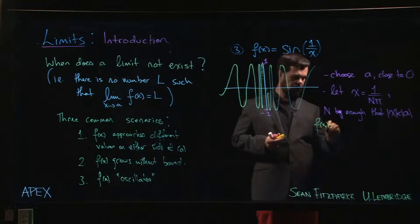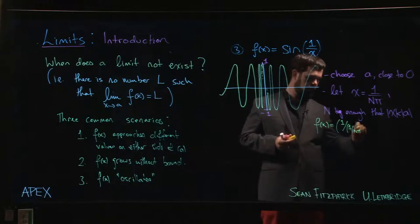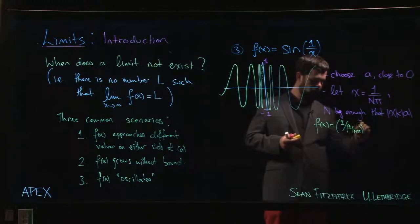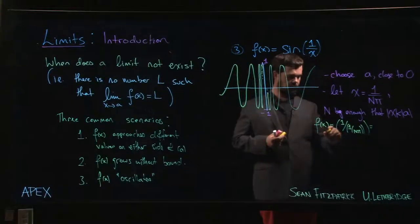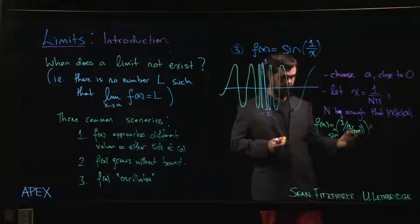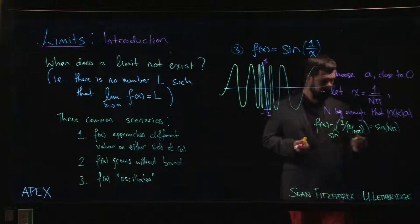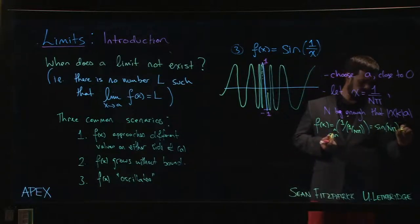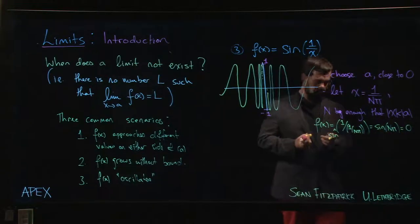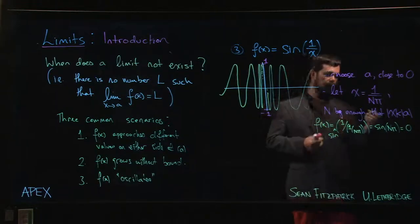Which is just sine of n times pi, so it's a multiple of pi and you get zero.